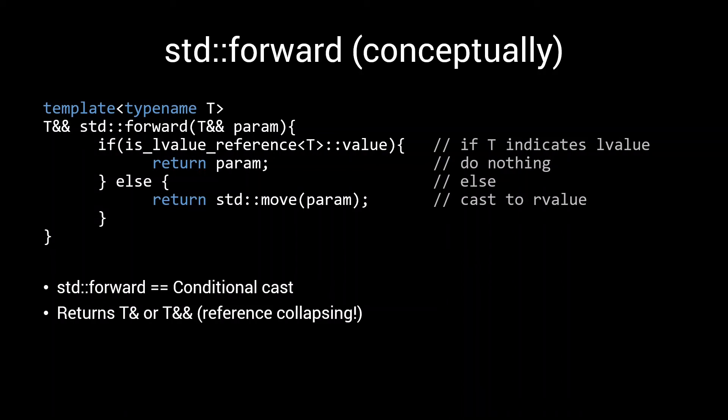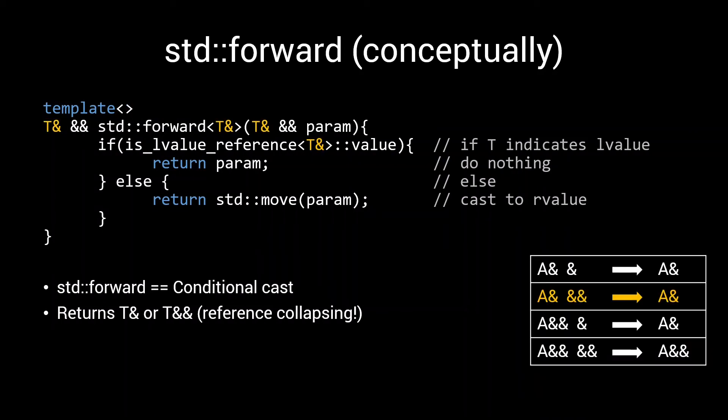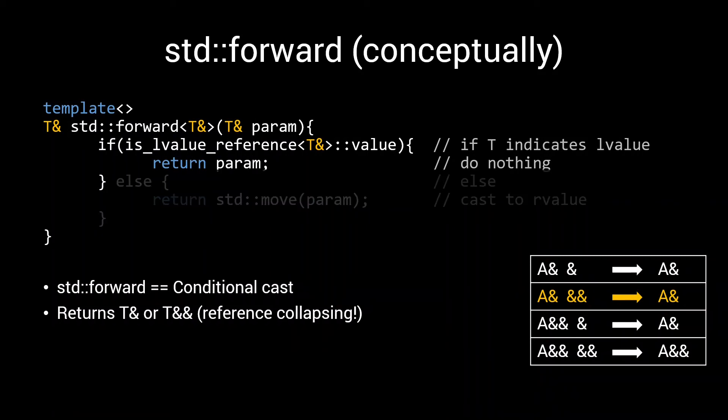Let me demonstrate. Say our foo was called with an l-value string. Then our std::forward will be called with an l-value reference to string as template parameter. And as such, when instantiating the function, the compiler invokes reference collapsing, which gives us this signature. Our input is an l-value reference, and our output is an l-value reference. The if case is triggered, and hence we simply pass on the input without even touching it.